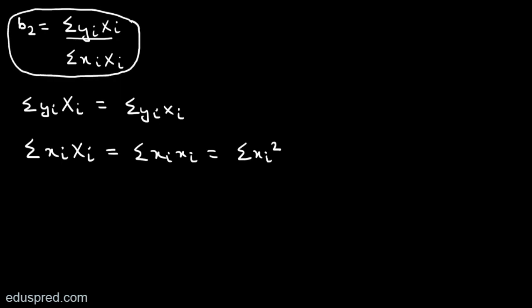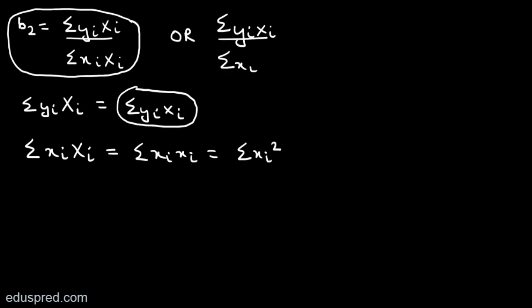I can write other versions as well. For example, I can write one more version by replacing the numerator with a particular expression and keeping the denominator the same. So the formula to calculate B2 could also be summation small yi multiplied by small xi divided by summation small xi multiplied by capital Xi. While going from this version to this version, I have changed the numerator and kept the denominator the same.